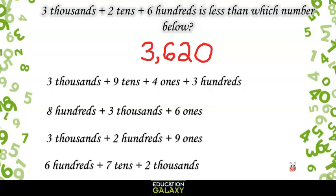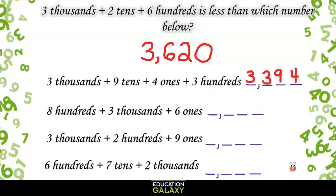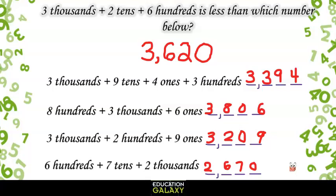Now let's figure out what each of the answer choices are. The first one has a 3 in the thousands, 9 in the tens, 4 in the ones, and 3 in the hundreds. That's 3,394. The second one has an 8 in the hundreds, 3 in the thousands, and 6 in the ones. There are no tens, so we put a 0 there to hold its place. That's 3,806. The third one has a 3 in the thousands, 2 in the hundreds, and 9 in the ones. There are no tens, so we put a 0 there to hold its place. That gives us 3,209. The last answer choice has a 6 in the hundreds place, 7 in the tens place, and 2 in the thousands place. Let's put a 0 in the ones place, since we don't have any. That gives us 2,670.